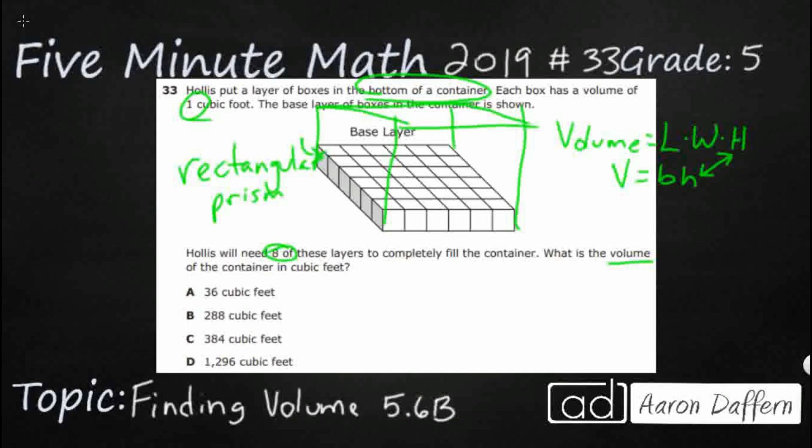H is going to stand for your height. So we need to know how tall or how high this container is. But then the difference here is this B is for the base. So the base is just what we see right here. The base is the area of the base layer. You're going to find the area of the base layer and you're going to multiply that by the height. Well, how do you find the area of the base layer, especially when we're looking at a rectangular prism?